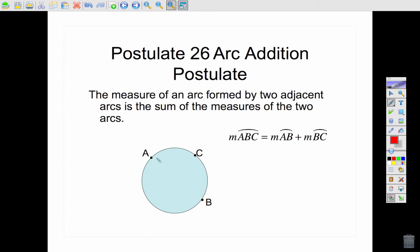So all it's saying is if I have arc ABC, which arc ABC is going to go around this direction, that just means it's the sum of AB plus BC. So those two arcs make up the whole.